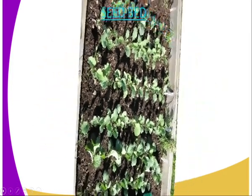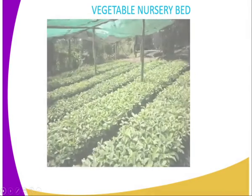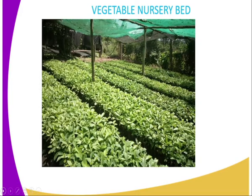Now we go to the types of nursery bed. The first one is the vegetable nursery bed. You can see it there — it is used for raising seedlings for vegetables. For example, you can have one for tomatoes, one for cabbage, one for kale, and so on.